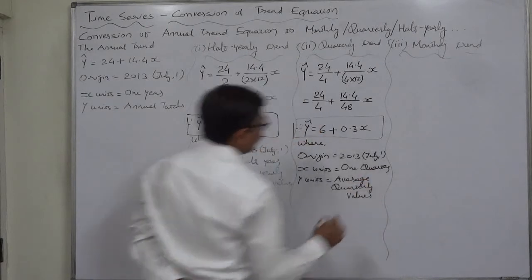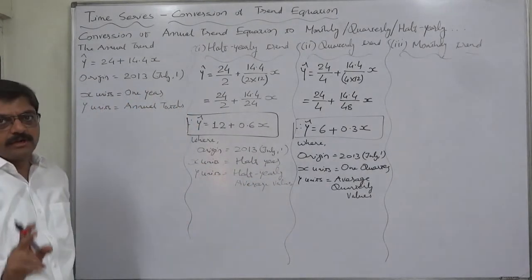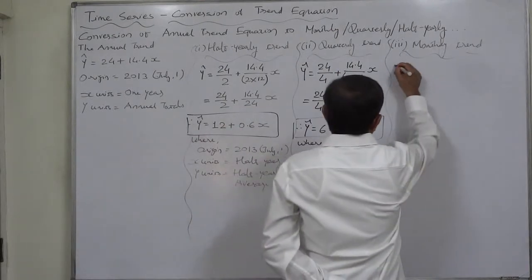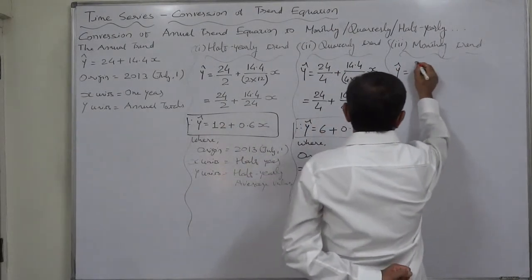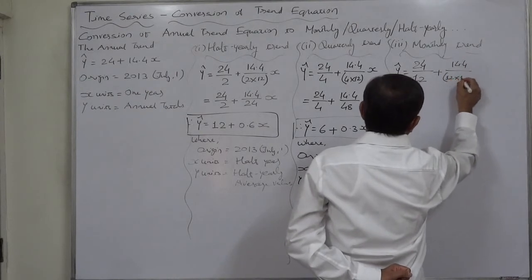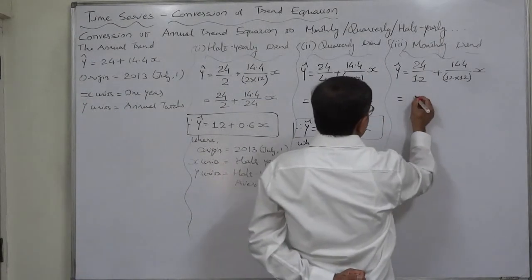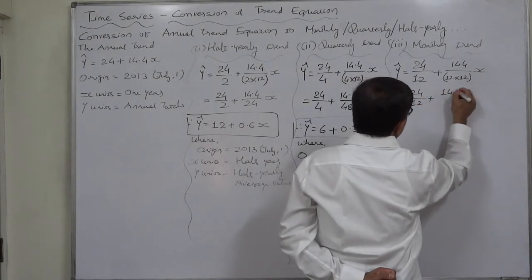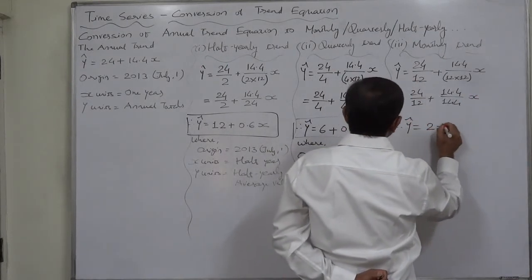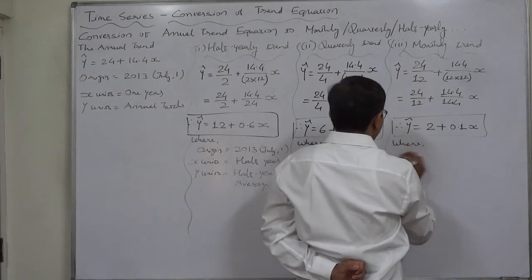Now for monthly trend conversion: 24 divided by 12 plus 14.4 divided by 12 into 1/12 x, so that the x values will be monthly. That gives 24/12 plus 14.4/144 x. So the monthly trend is y estimated equals 2 plus 0.1x, where the origin has no change.